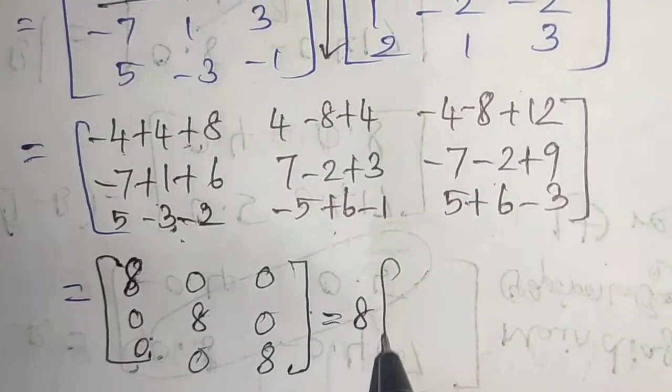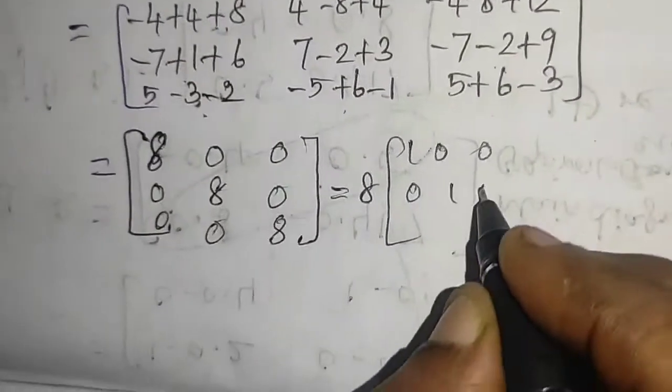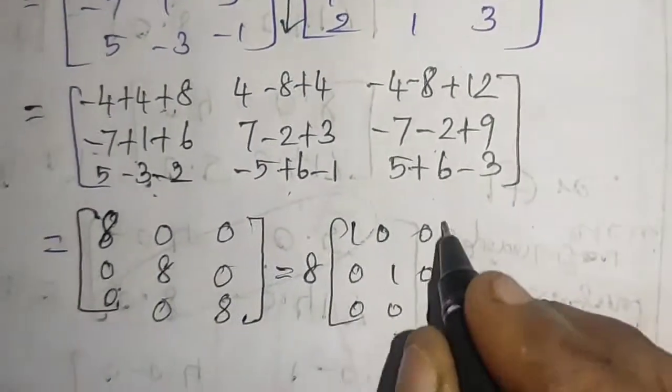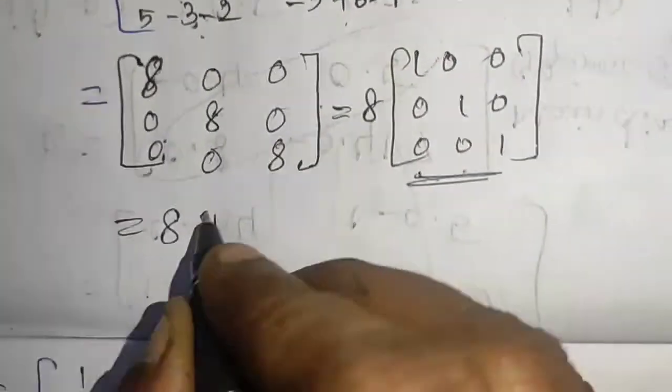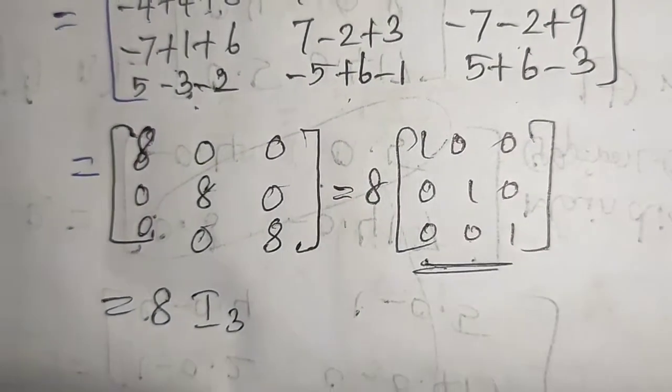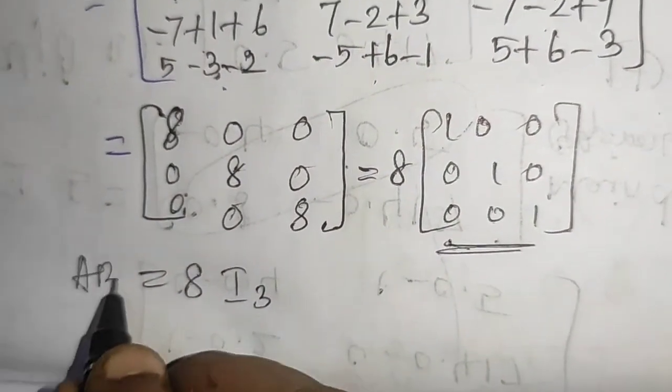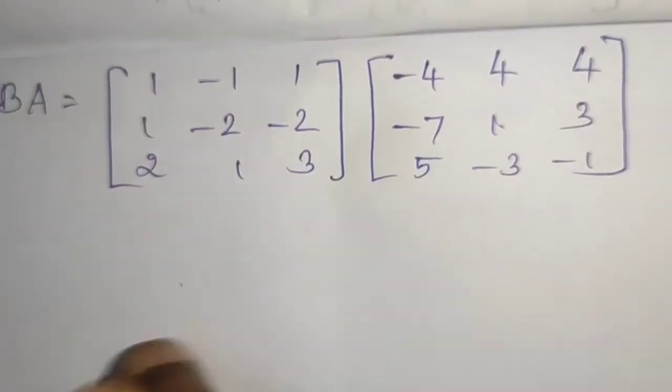6 minus 6 is 0, 9 minus 9 is 0, 11 minus 3 is 8. So this will be 8 times the matrix 1, 0, 0, 0, 1, 0, 0, 0, 1. This is order 3 cross 3. So 8 into I3, the unit matrix of order 3.